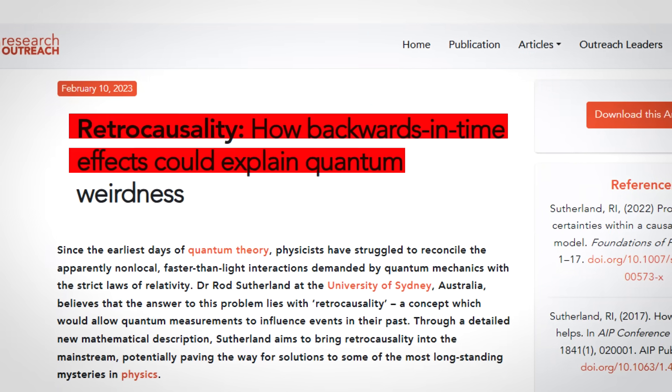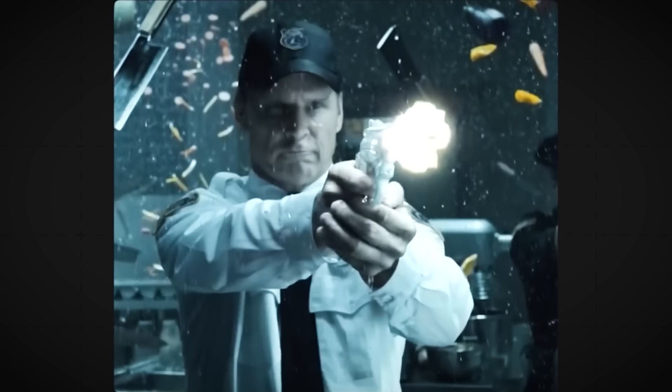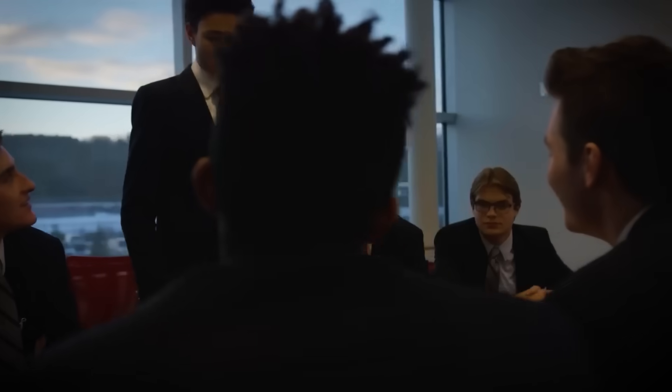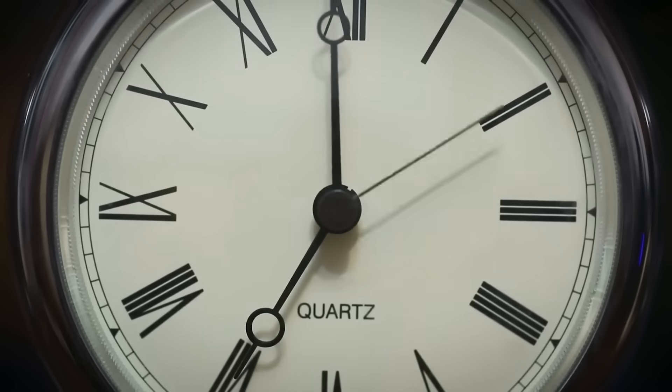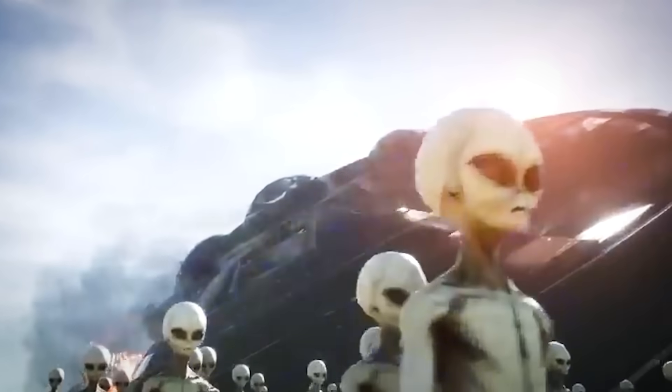The idea of retrocausality, the notion that future events can influence the past, has been a growing area of discussion in quantum physics. Some researchers believe that entangled particles may already be demonstrating a form of backward communication at the quantum level. If quantum computers are amplifying this effect, then what happens when this technology advances beyond its current stage? Could we reach a point where the future starts rewriting the present in ways we can no longer predict? Some physicists speculate that if retrocausality is real, then the moment we start manipulating time on a larger scale, we may also begin to experience resistance. Anomalies, paradoxes, or even active interference from an unknown source could be signs that there are consequences to tampering with time. And that raises an even bigger question: Who or what is on the other side of this discovery?